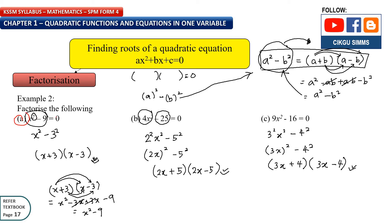For this question: x squared minus 9 equals 0. You can factorize this as (x plus 3)(x minus 3), which is the difference of squares factorization. The first part equals 0 and the second part equals 0. Move plus 3 to become negative 3, and move minus 3 to become positive 3. So negative 3 and 3 are the roots.